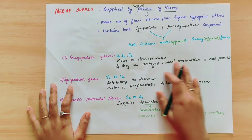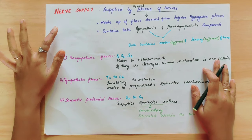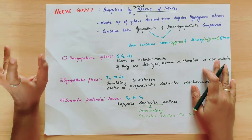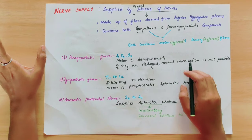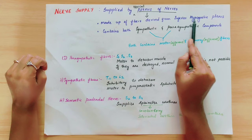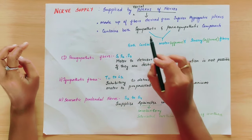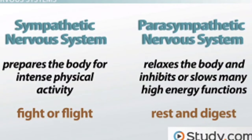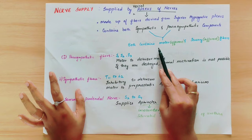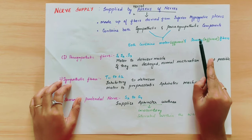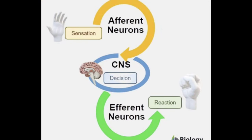Now coming to the nervous supply. The nervous supply is a complicated topic, but if you concentrate you can easily understand. It is supplied by the vesical plexus of nerves, which is made up of fibers derived from the inferior hypogastric plexus. There are sympathetic and parasympathetic components, and two types of fibers: motor fibers and sensory fibers. Sensory fibers are known as afferent — they carry signals to the central nervous system. Motor fibers carry instructions from the central nervous system.